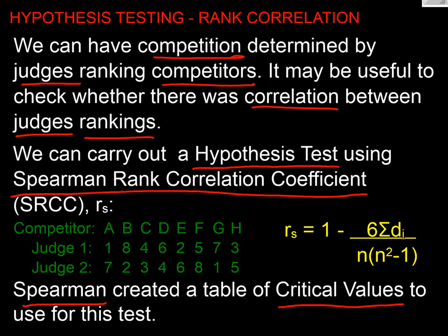So let's just have a very quick look at this example. If we've got eight competitors here, A to H, and judge one says that A is first and E is second and H is third, etc., all the way through. Judge two thinks that G is first and B is second and C is third and all the way through.